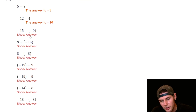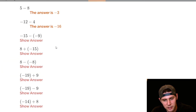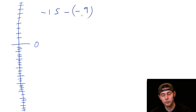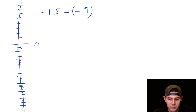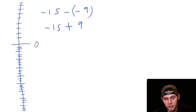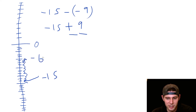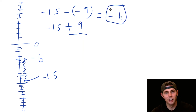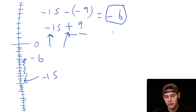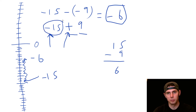Next: negative fifteen minus negative nine. First, as soon as we see minus a negative we make it a plus: negative fifteen plus nine. We start at negative fifteen and go up nine: one through nine, bringing us to negative six. Alternatively, negative fifteen and positive nine work against each other — fifteen minus nine is six — and since the larger number is negative, the answer is negative six.